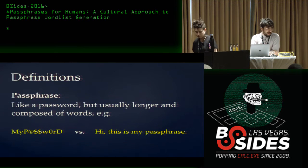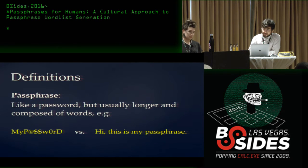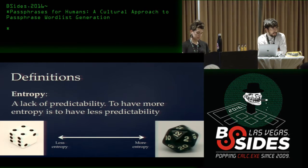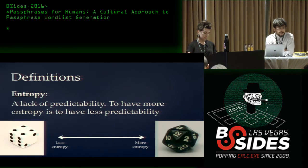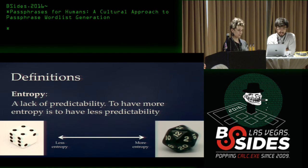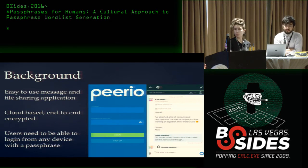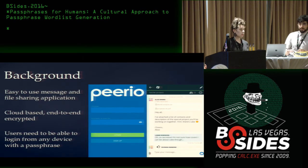For anyone who's not familiar, a couple of definitions: a passphrase is really just like a password but usually longer and composed of words — there are different ways you can do this. Entropy is just a lack of predictability; to have more entropy is to have less predictability. For example, if you were to guess one number on a die, the 20-sided die would be harder to guess correctly than a 6-sided one.